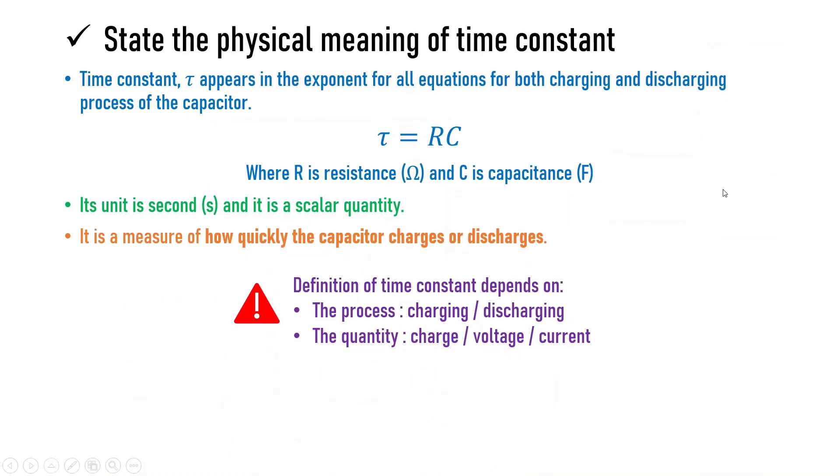So, the first learning outcome is to state the physical meaning of time constant. Time constant appears in the exponent for all equations for both charging and discharging processes of the capacitor. The formula is given by tau equals RC, where R is the resistance in ohms and C is the capacitance in farads. Its unit is seconds and it is a scalar quantity.